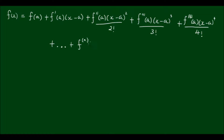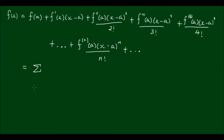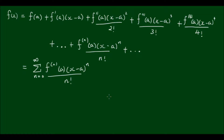So to the nth derivative of f at a, times (x minus a) to the power of n, on n factorial, and it continues. I can write this summation in shorthand: the sigma from n equals 0 to infinity of f at a, times (x minus a) to the power of n, on n factorial. This is what we call the Taylor series.